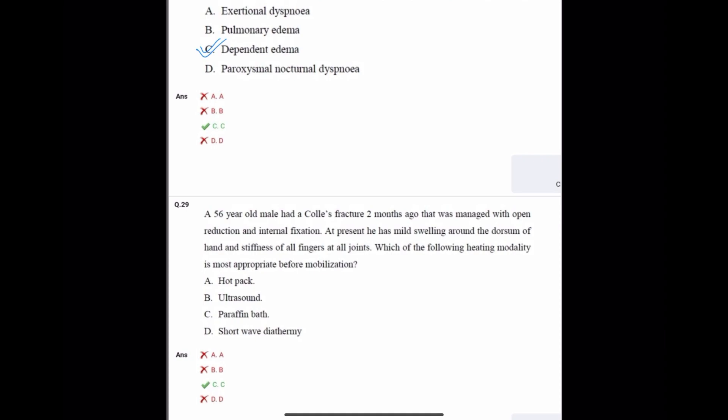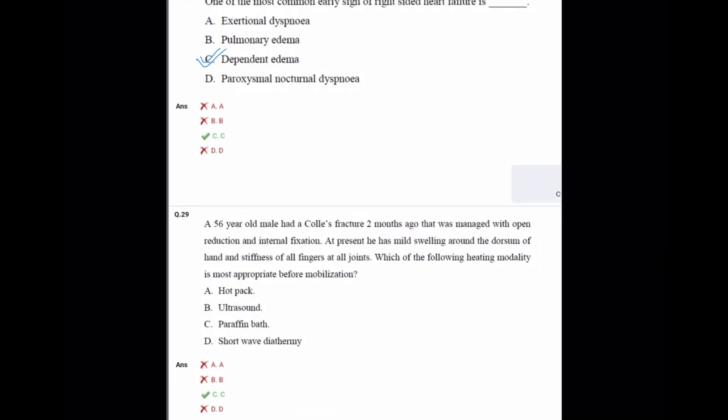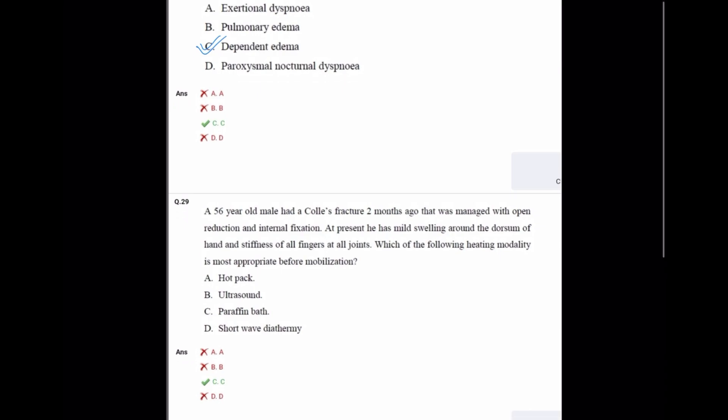Question number 29: A 56 year old male has a Colles fracture - that is distal radius fracture - two months ago managed with open reduction and internal fixation. At present he has mild swelling around the dorsum of the hand. Which heating modality is most appropriate before mobilization? The most appropriate modality is paraffin wax bath. So answer is C.